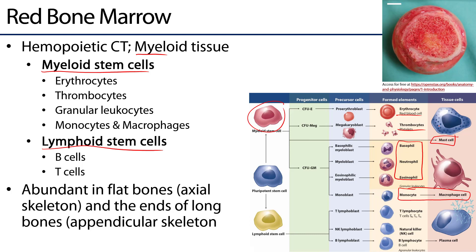The lymphoid stem cells give rise to lymphocytes. These include T lymphocytes or T cells, natural killer cells, and B lymphocytes or B cells, and their derivatives plasma cells, which are the mature B cells.